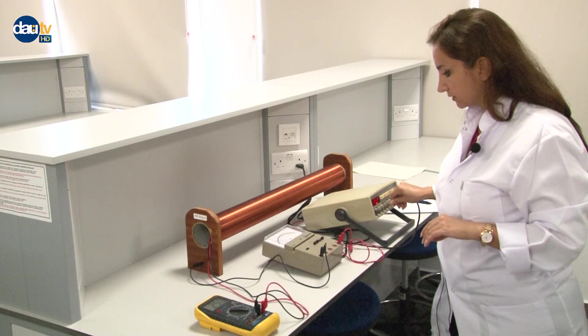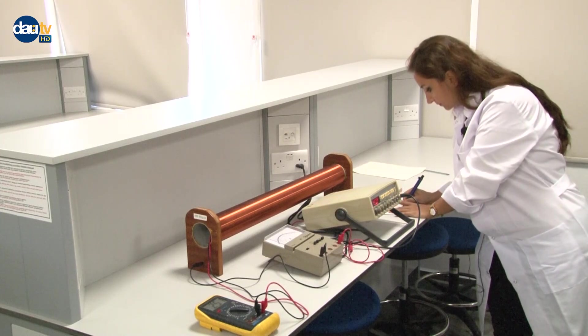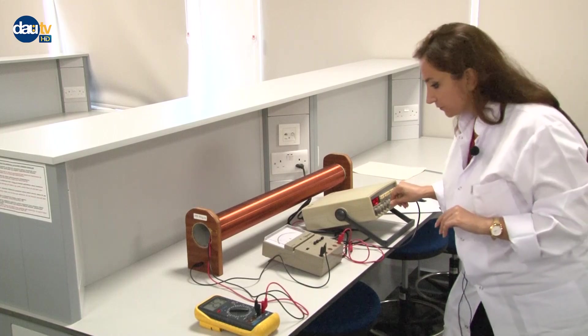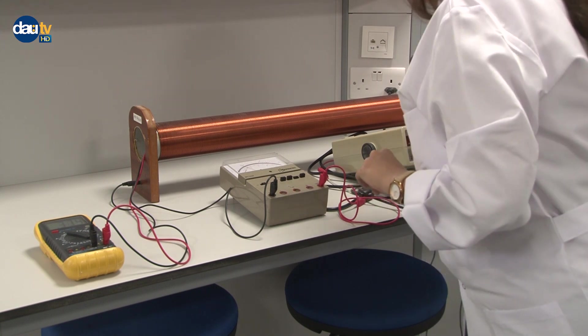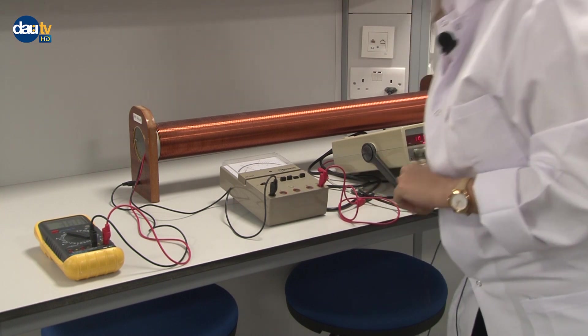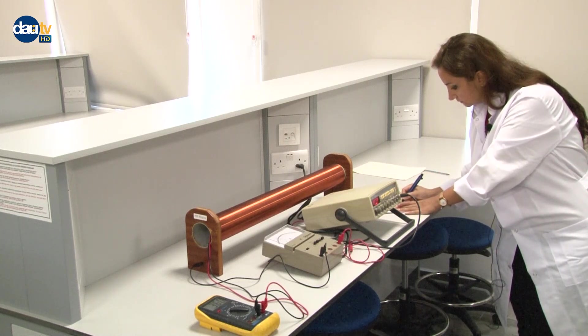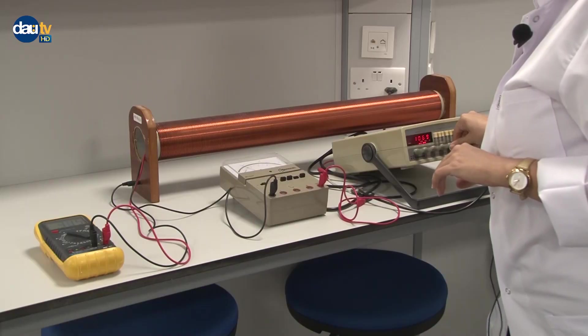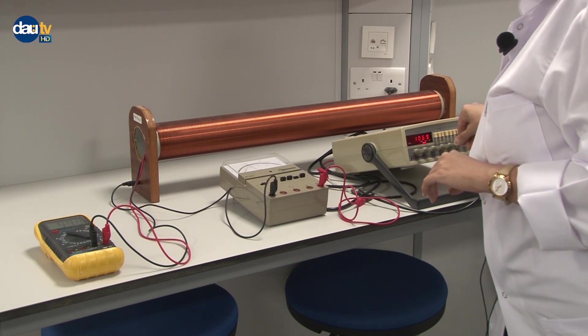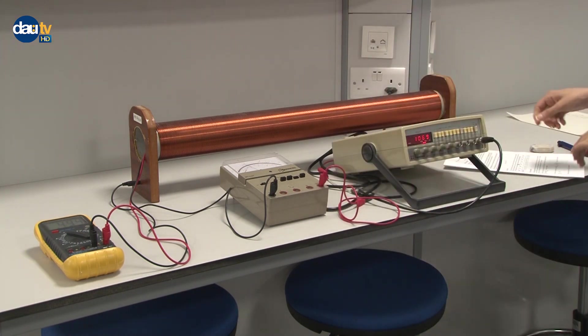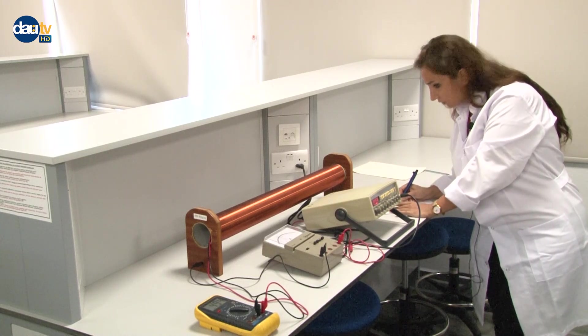Then it is 20, 0.251. Then it is 30. I want to be accurate, 0.360. Then it is 40. We are increasing our current, so our EMF is proportional to current, so it is increasing as well. 0.494.